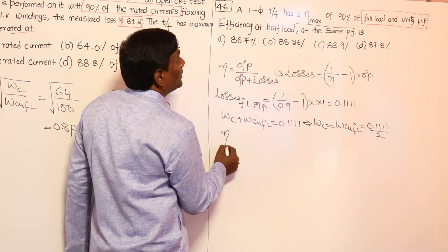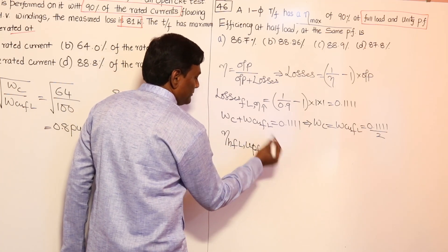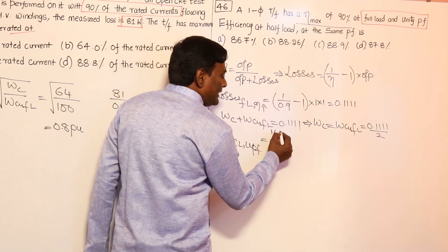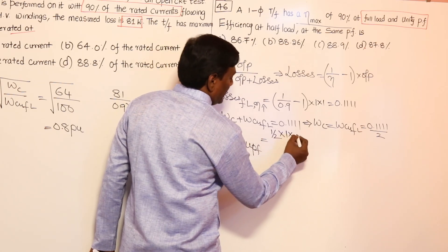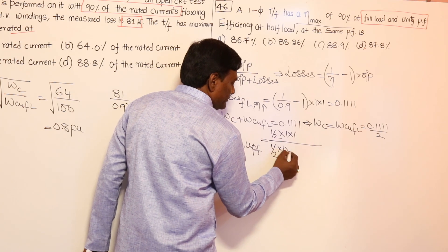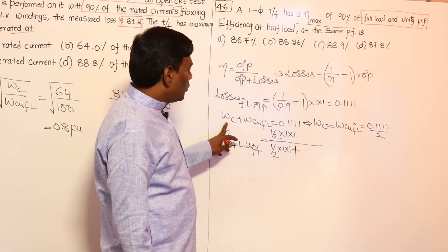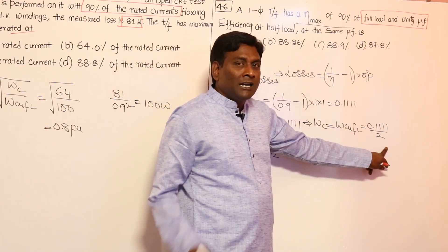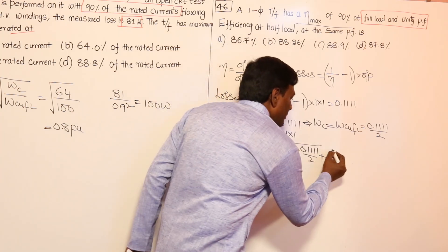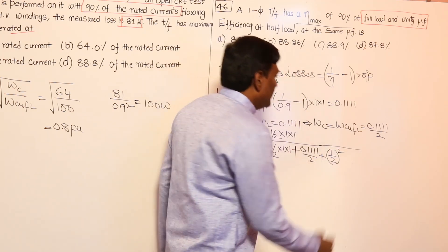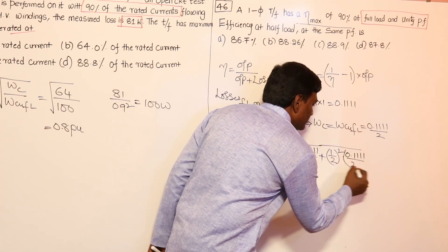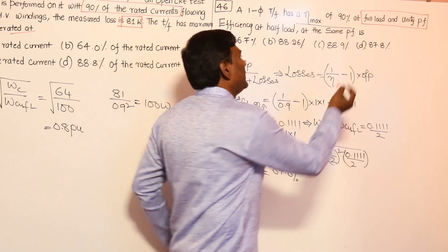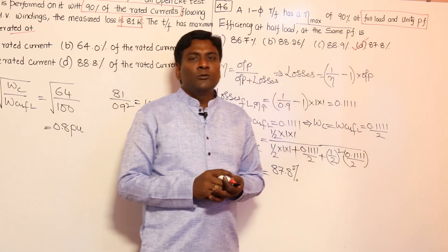Now calculating efficiency at half full load, unity power factor: output equals 0.5 per unit. Core loss remains constant at 0.1111/2. Copper loss at half load is (0.5)² times full load copper loss, which equals (1/4) × (0.1111/2). Efficiency at half full load equals 0.5 divided by (0.5 + 0.1111/2 + 0.1111/8), giving approximately 87.8%. In the upcoming session, many more problems will be solved.